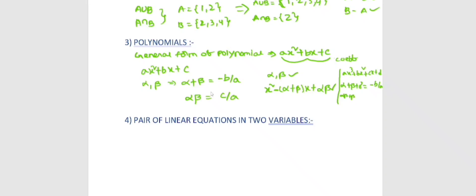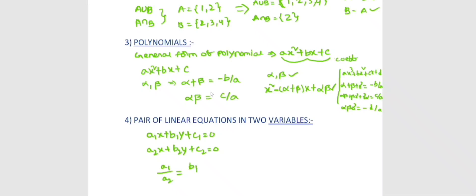For pair of linear equations: a1x plus b1y plus c1 equals 0 and a2x plus b2y plus c2 equals 0. If a1 by a2 is not equal to b1 by b2, we have intersecting lines — this gives a unique solution.